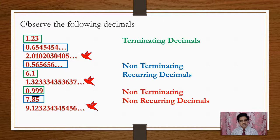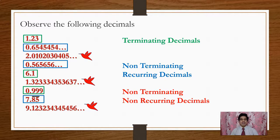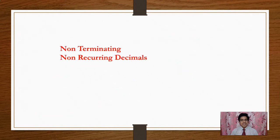These types of decimals are called Non-Terminating and Non-Recurring Decimals. They do not terminate and the digits do not repeat in any fixed order.